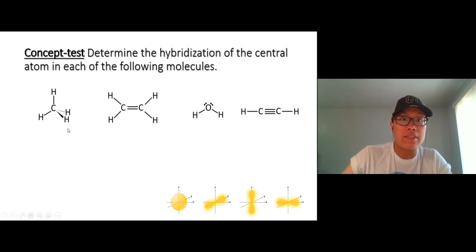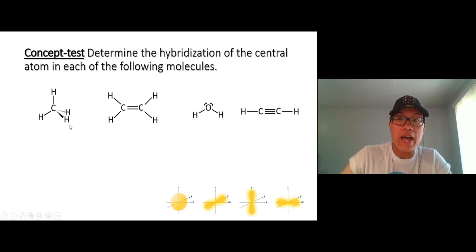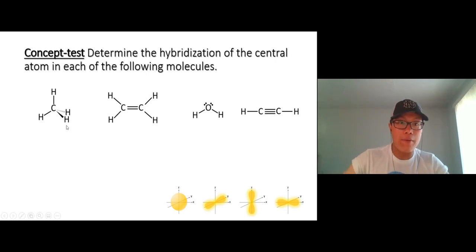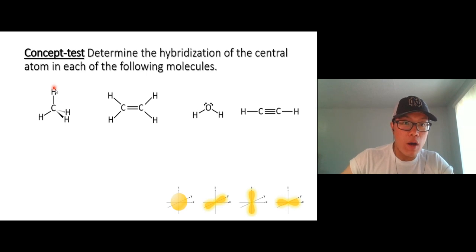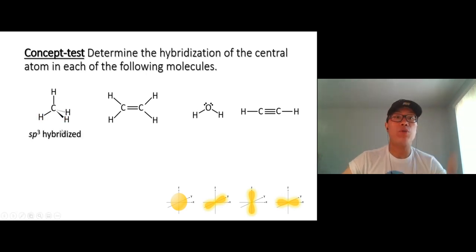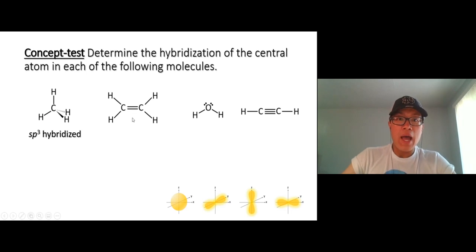How do you know that? You count the things around it — atoms and lone pairs. This carbon needs one orbital, two, three, and four — four orbitals total. So this carbon is sp3 hybridized.